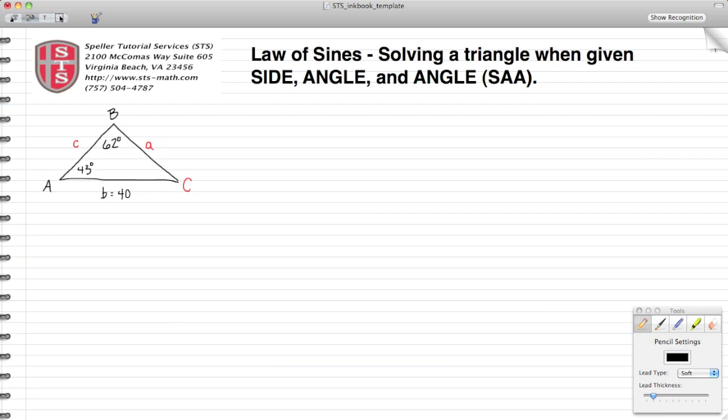We're going to start by solving for angle C. We know that the interior angles of a triangle add up to 180 degrees, so we have 43 degrees plus 62 degrees plus C is going to equal 180.